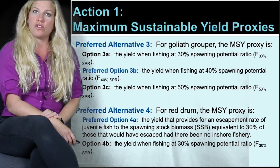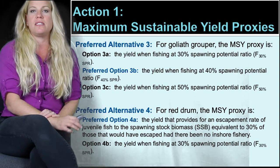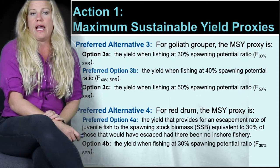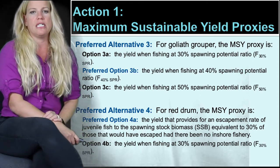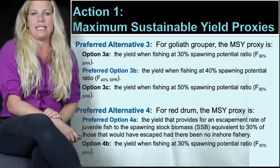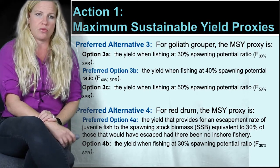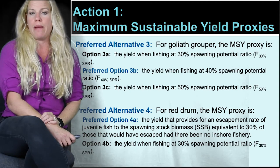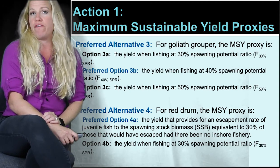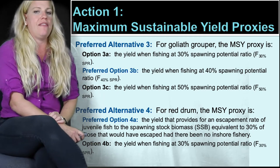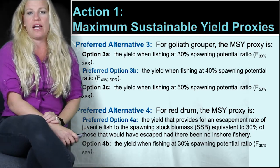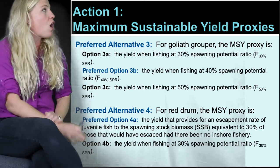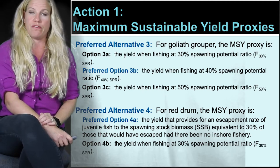Option 2C would set the MSY proxy at the yield when fishing at 40% of spawning potential ratio. Alternative three is also one of the council's preferred alternatives and specifically pertains to Goliath grouper. Option 3A would set that MSY proxy at a yield when fishing at 30% spawning potential ratio. The current preferred option, 3B, would set the Goliath grouper MSY proxy at the yield when fishing at 40% spawning potential ratio. Option 3C would set the Goliath grouper MSY proxy at a yield when fishing at 50% spawning potential ratio.